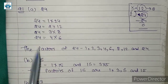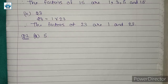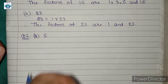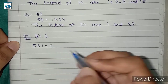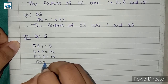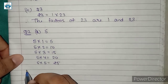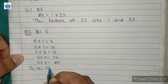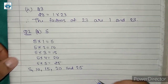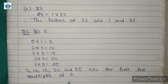Question 2: Write the first 5 multiples of the given numbers. Part a: first 5 multiples of 5. We write: 5 × 1 = 5, 5 × 2 = 10, 5 × 3 = 15, 5 × 4 = 20, and 5 × 5 = 25. Therefore, the first 5 multiples of 5 are 5, 10, 15, 20, and 25.